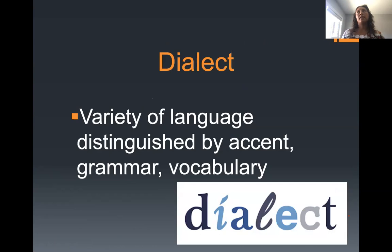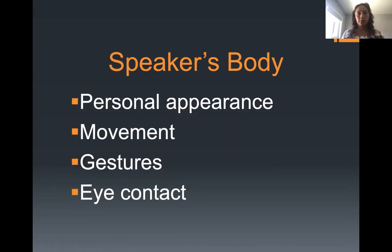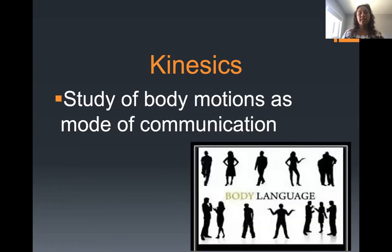Dialect is a variety of language distinguished by accent, grammar, and vocabulary. Think of how people speak in different regions — someone from the west coast will have a different dialect and accent than someone from the east coast. There is also the speaker's body to consider: personal appearance, movement, gestures, and eye contact. Kinesics is the study of body motion as a mode of communication.